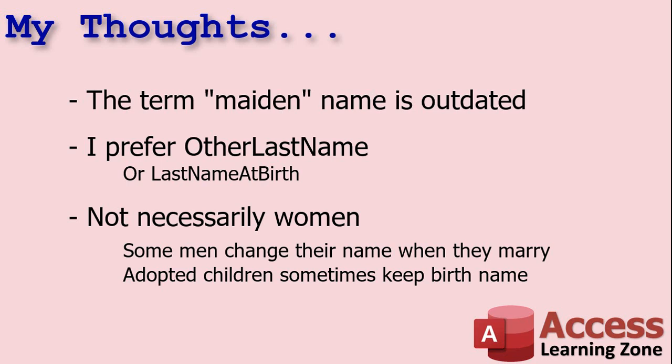Another reason is that a different birth name doesn't necessarily only apply to women. Some men, for example, change their name when they marry. My fiancé is still trying to get me to take her last name — D'Angelo. But I think Rost is awesome. It's nice and short and sweet, and I've had it for 50 years, so I'm keeping it. Also, adopted children sometimes keep their birth name and want to track both for legal reasons.